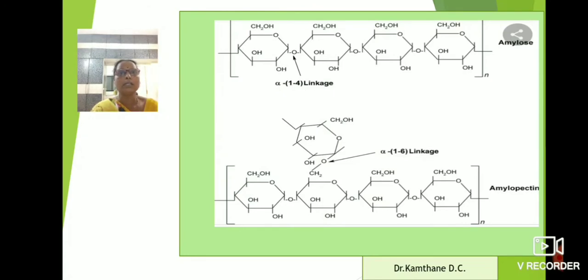In amylose, alpha-1,4 linkage is present while in case of amylopectin, both alpha-1,4 and alpha-1,6 linkages are present.